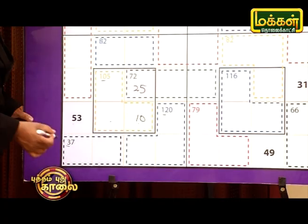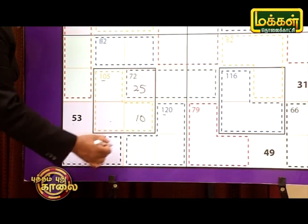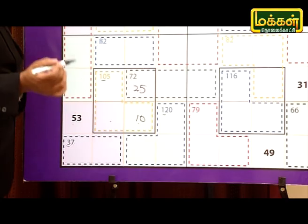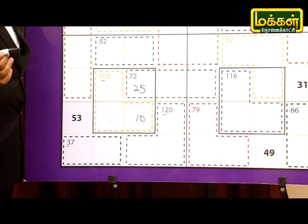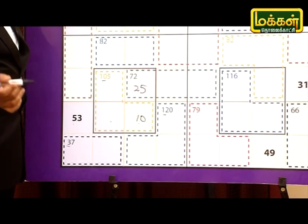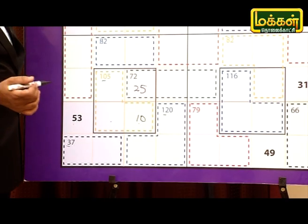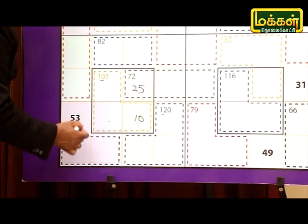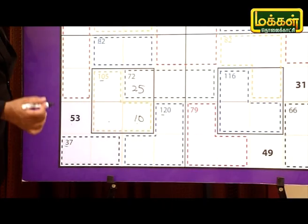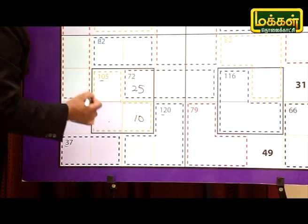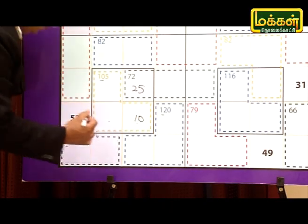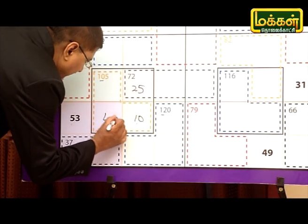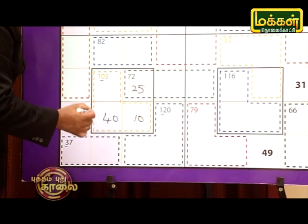This is 53. So, if you get 3, if you get 53 plus 37: 55 plus 7 is 60, 60 plus 30 is 90. If you get 3, it's 90. If you get 4, it's 90. This is 90. It's 60.